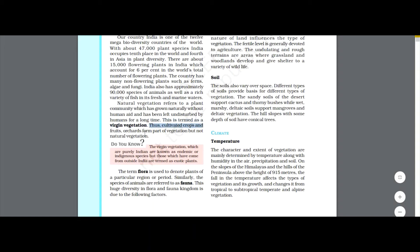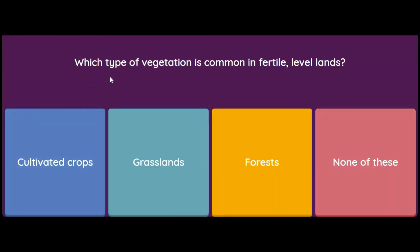Cultivated crops and fruits and orchards form part of vegetation but not natural vegetation. Which type of vegetation is common in fertile, level lands — cultivated crops, grasslands, forests, or none of these? We know that on fertile and level lands we cultivate crops, so the answer is cultivated crops.